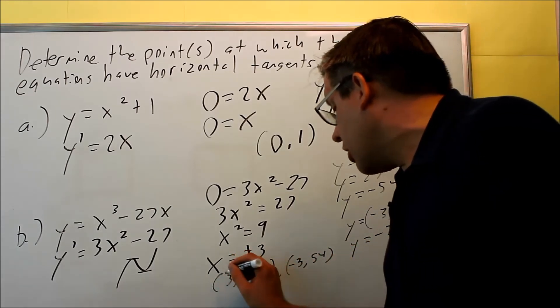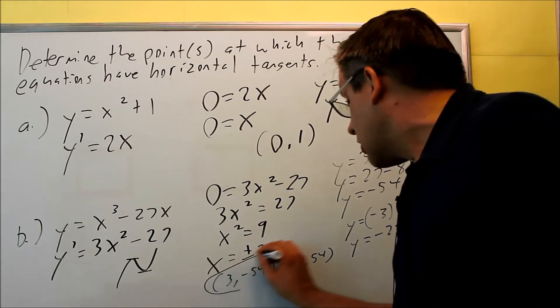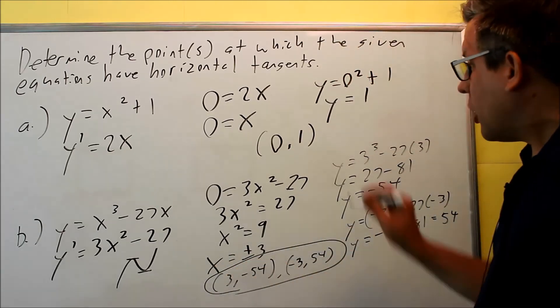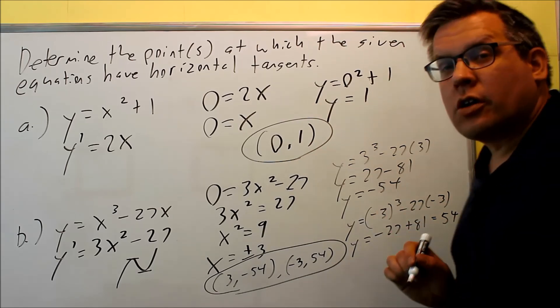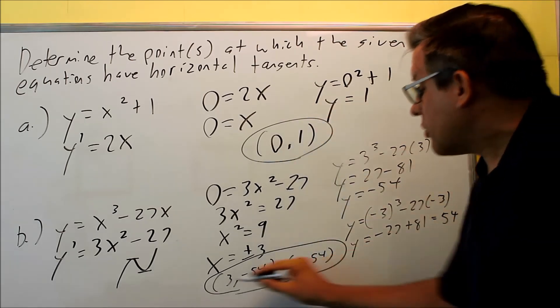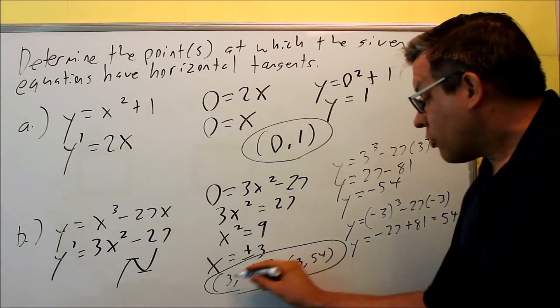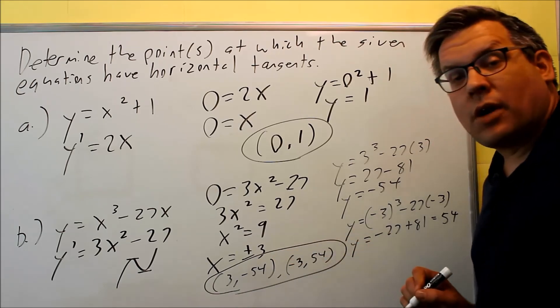So then this would be your actual answer, I'll circle it here. So that's your answer for part a, and again this is your answer for part a was (0,1), and this is your answer for part b, (3, -54) and (-3, 54).